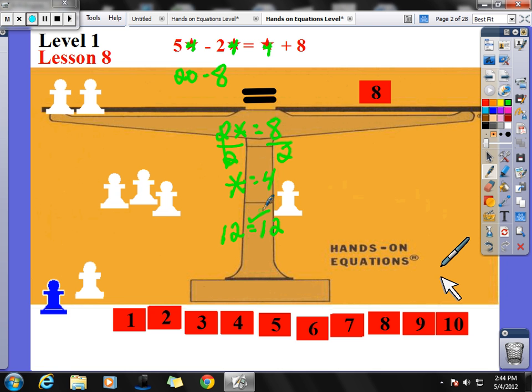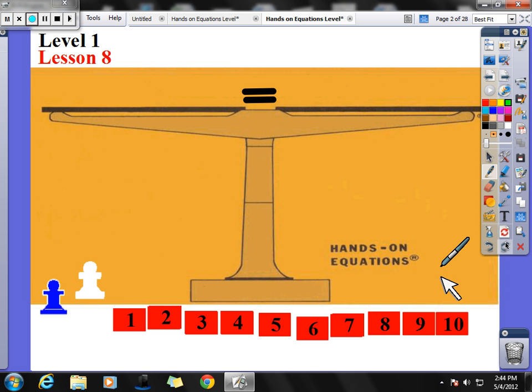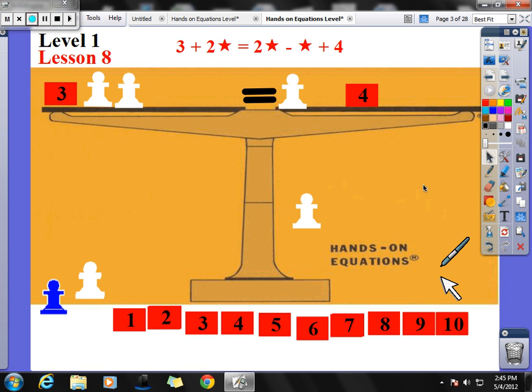Let's try one more example and then I'm going to give you time to work on lesson 8 in class. The example we have is 3 plus 2 star. The number 3 plus 2 stars equals 2 star minus star plus 4. And again, let's take away what we can. Take 1 star from both sides because I can.